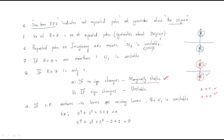If any sign changes occur, the system is unstable. A sign change means there is at least one pole in the right-hand side. If there is no sign change, there are no poles in the right-hand side — just keep that in mind.